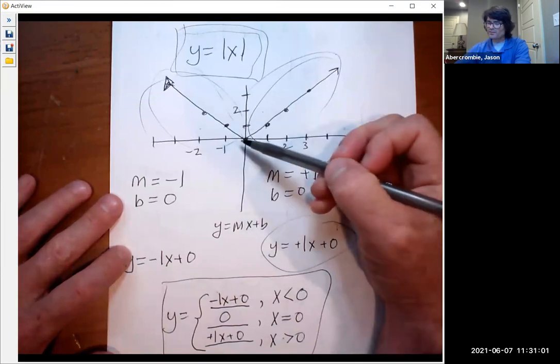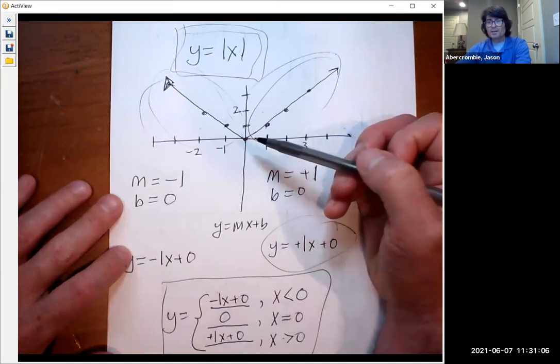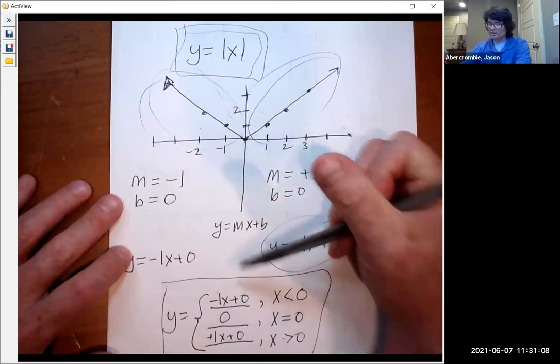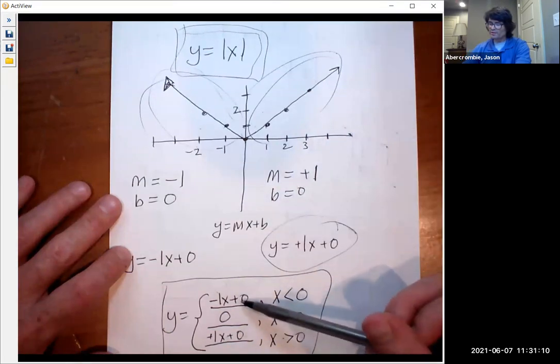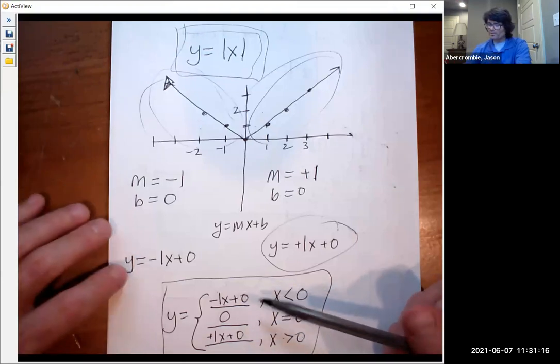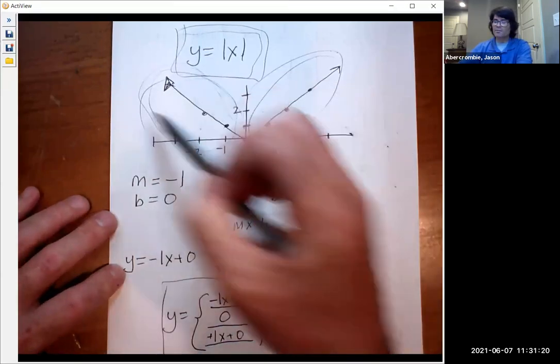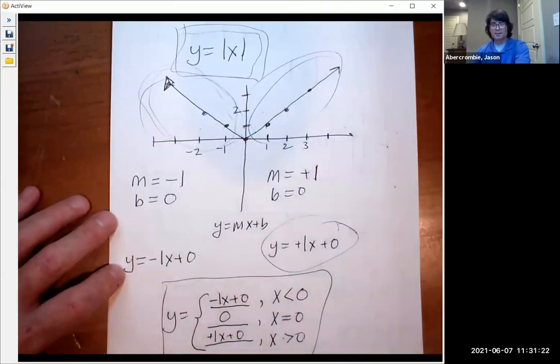Something to kind of note here. See how this is kind of a sharp turn? When you have a sharp turn, you cannot describe a function as like a single linear equation or a single quadratic or whatever. You really need a piecewise function to describe this section on this side and then this section on this side afterwards.